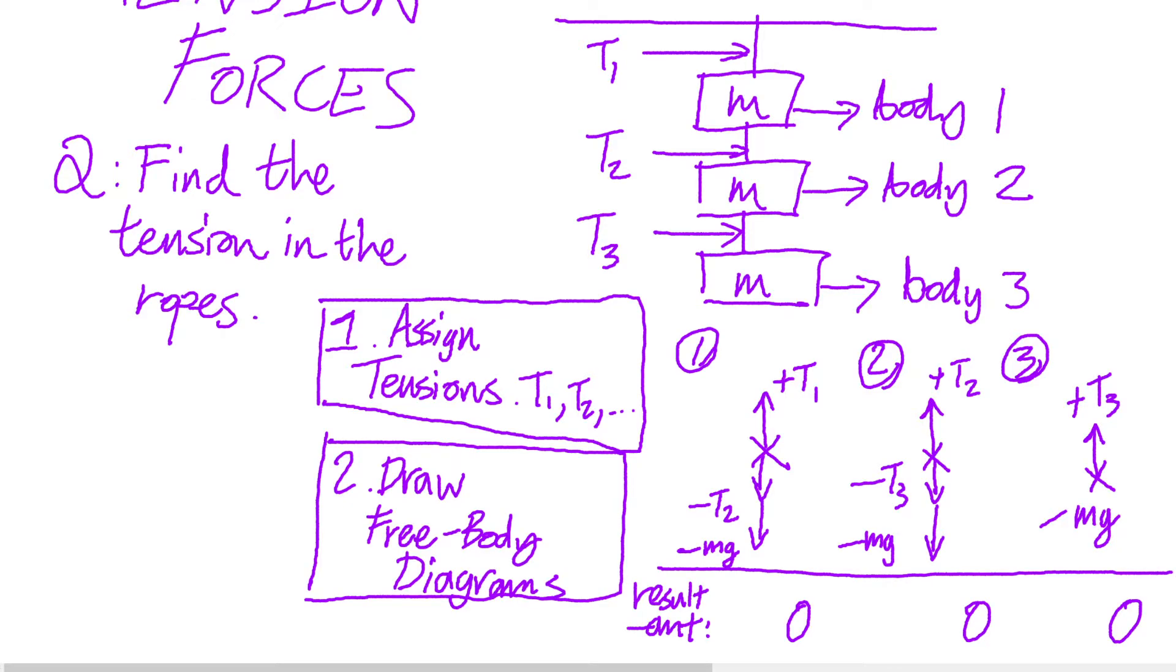You can see I've constructed a free body diagram for each body in the system and use the information that these bodies are at rest to declare that the resultant force in each of the free body diagrams is zero. If I say for instance because this is a one-dimensional situation that any upwards force is positive and any downwards force is negative, we can use that representation of the forces to create three equations, one for each diagram, because the resultant force is the sum of the forces, the vector sum of the forces acting on a body.